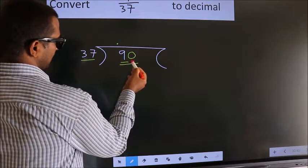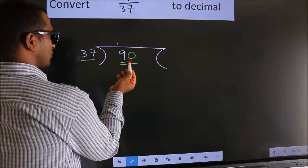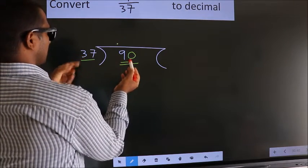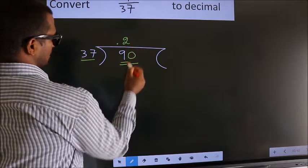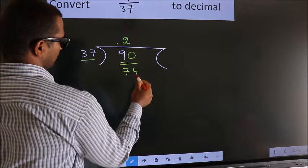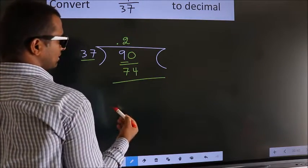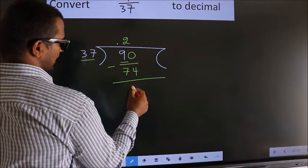So, 90. A number close to 90 in 37 table is 37 twos, 74. Now, we should subtract. We get 16.